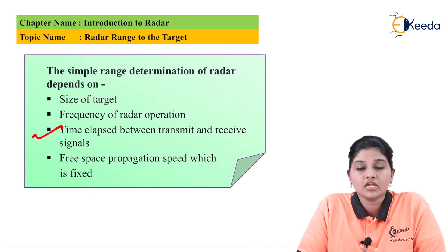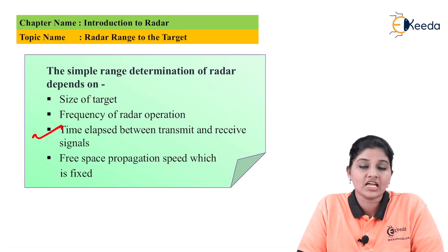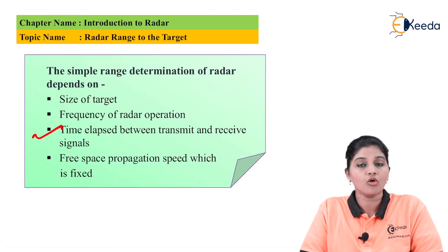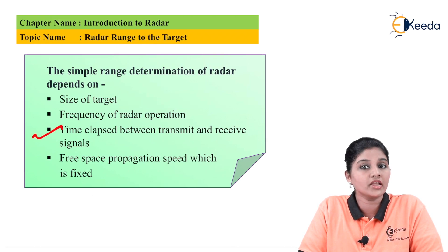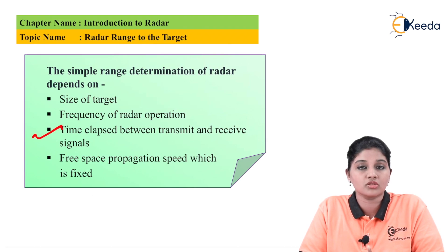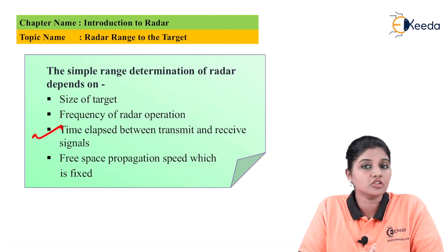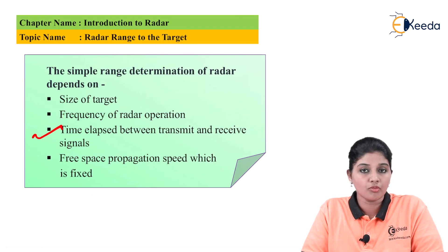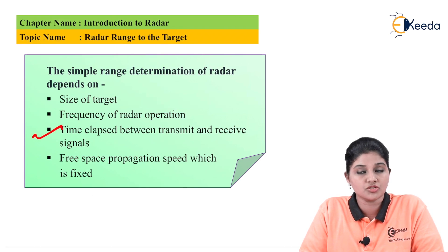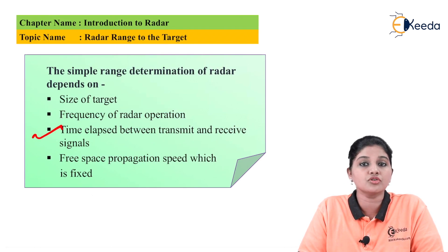So in this way we can find out the range or the distance at which the object is present. I hope you understand this topic of finding out the range for the radar, so that the radar can determine the presence and also the location of the object. Thank you very much for watching this video.